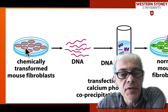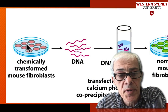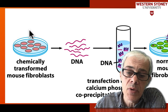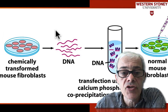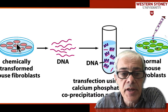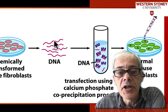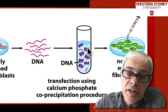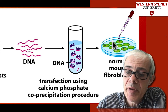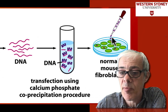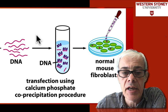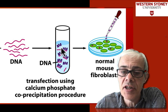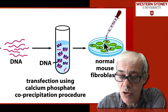So this is the basic experiment. You have normal mouse embryo cells and you chemically transform them — you treat them with a chemical that causes DNA mutations. You then extract the DNA from these mammalian cells and, using the calcium phosphate transfection assay, you take that DNA and transform it into normal mouse fibroblasts. You're taking mammalian DNA treated with a carcinogen and transforming it into normal cells.